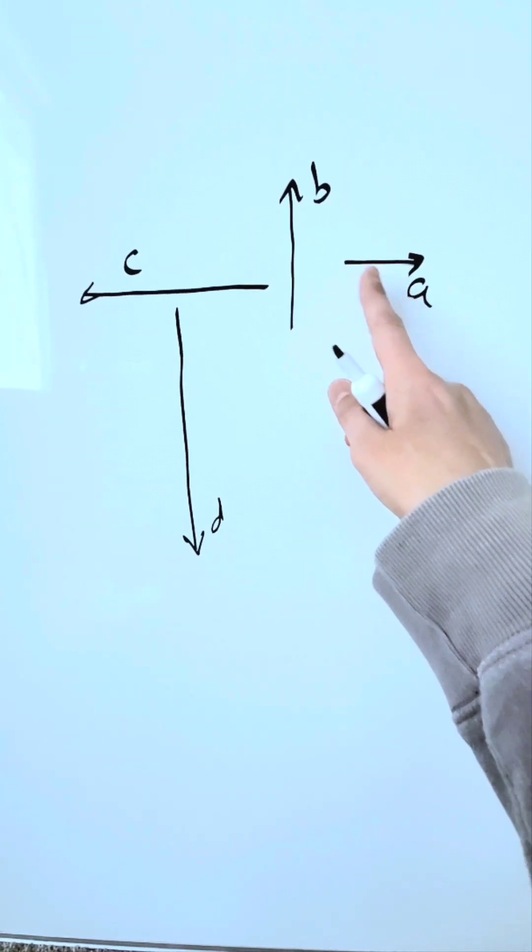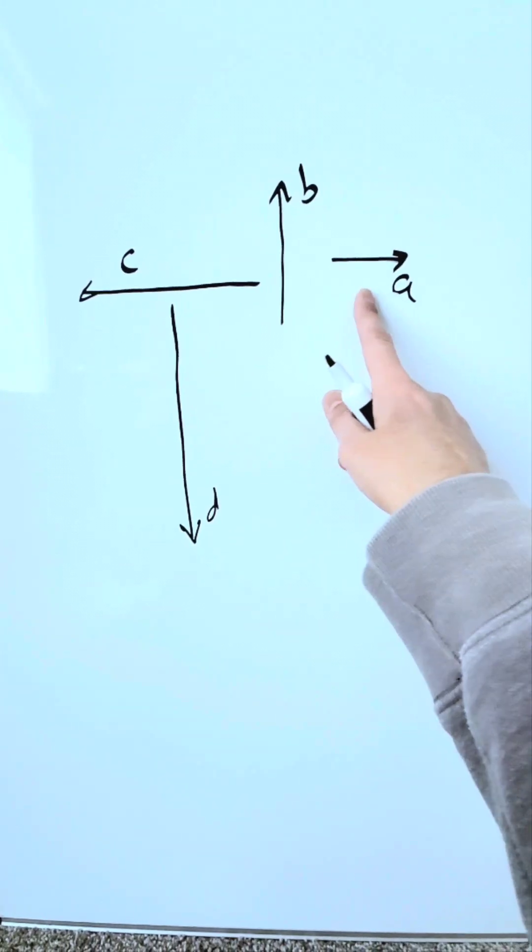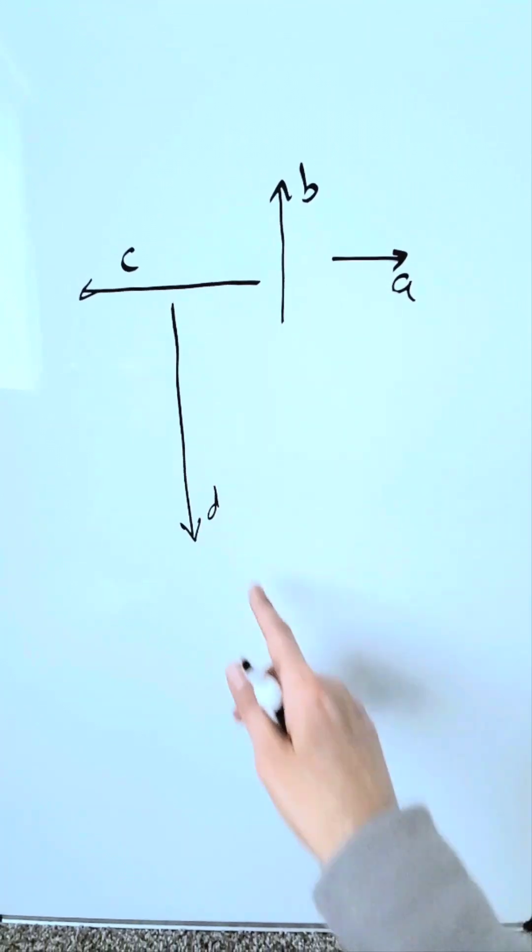They're getting progressively longer from A to B to C to D, and look at their directions. This is east, that's north, that's west, that's south.